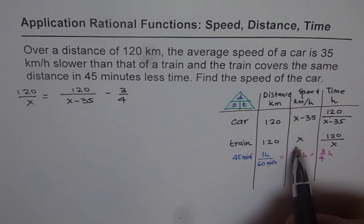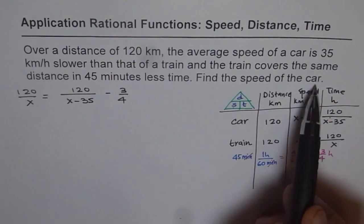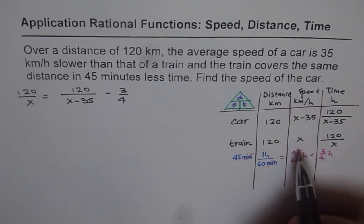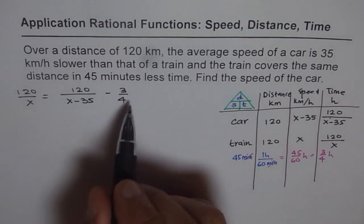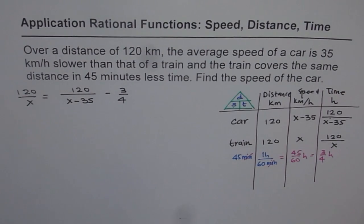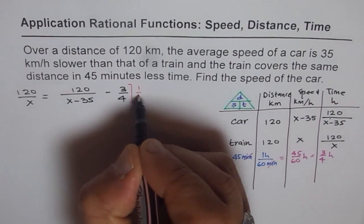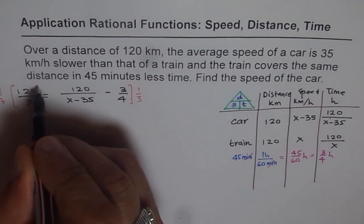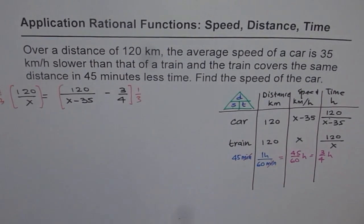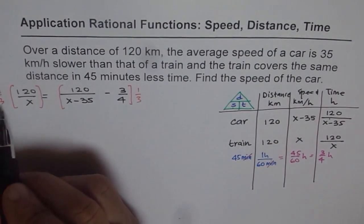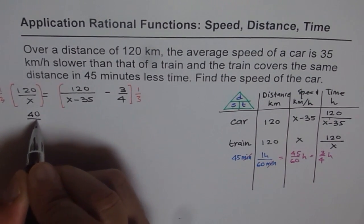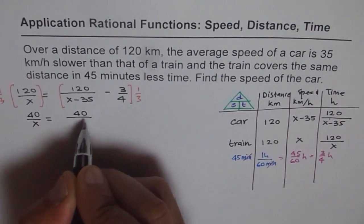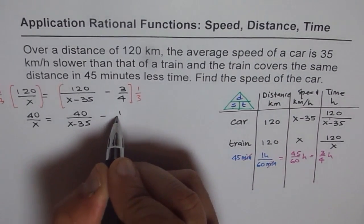Normally one should define the variable for what the question asks — speed of the car — but we went the other way, so we'll follow that through. To solve rational equations, look first for common factors to work with smaller terms. Both sides can be divided by 3, giving us: 40/x = 40/(x − 35) − 1/4. That's our simplified equation.